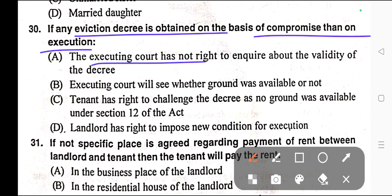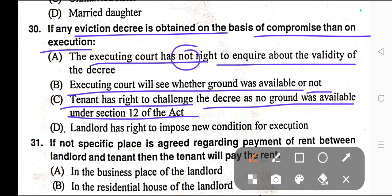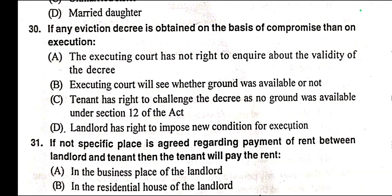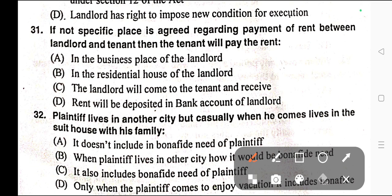Question number thirty: If any eviction decree is obtained on the basis of compromise, then on execution — A) The executing court has no right to inquire about the validity of the decree, B) Executing court will see whether the grounds were available or not, C) Tenant has right to challenge the decree as no ground was available under Section 12 of the act, D) Landlord has right to impose new conditions for execution. Correct answer is option A — the executing court has no right to inquire about the validity of the decree.